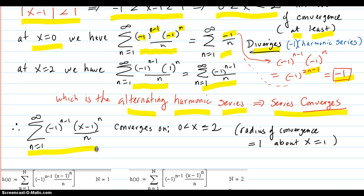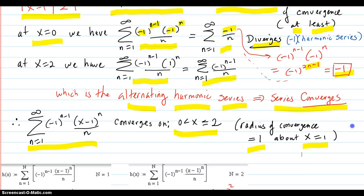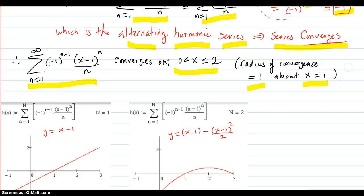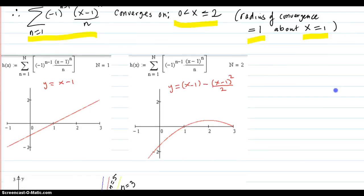So our original series converges on these x values: 0 less than x less than or equal to 2. And the radius of convergence is 1, about x equal to 1. So the power series was centered at 1, and the radius went out 1.